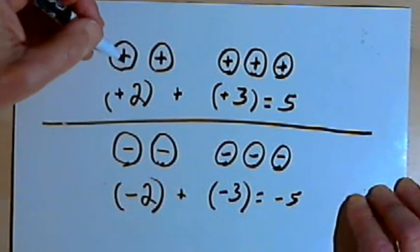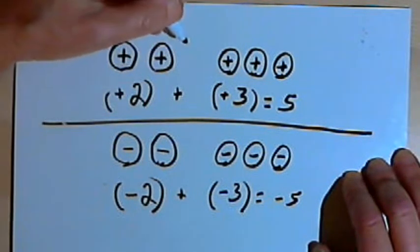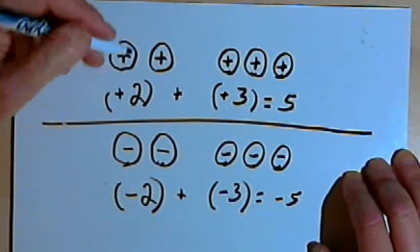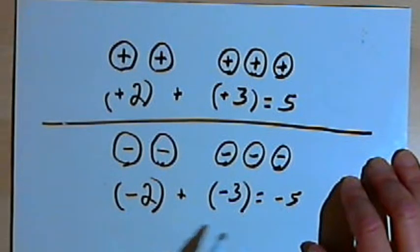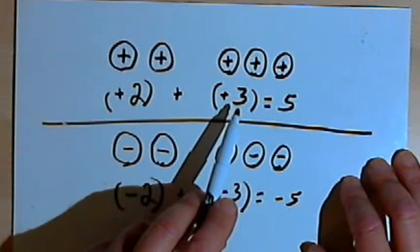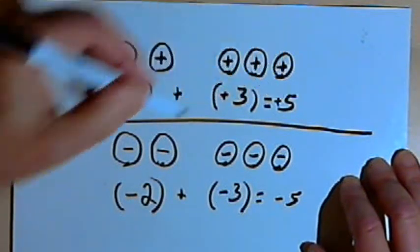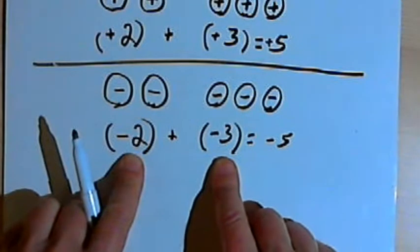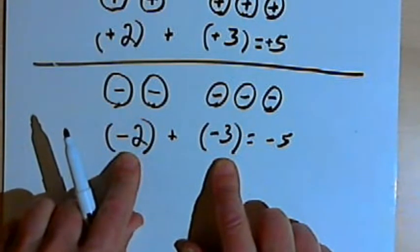Now, looking at these two cases, in both cases we had the same signs all the way through — either two positive numbers or two negative numbers. What we can say is: if the signs are the same, just add the absolute values and give the sum the sign that both numbers had. So the absolute value of 2 is 2, the absolute value of 3 is 3 — add those together and get 5. They were both positive, so it's positive 5. When the numbers were both negative, we add their absolute values: absolute value of negative 2 is 2, absolute value of negative 3 is 3 — we add 2 and 3 and get 5. Since they were both negative, we end up with negative 5.